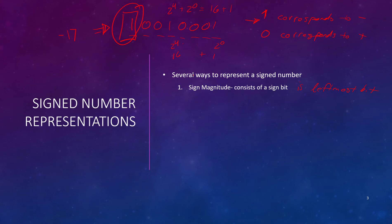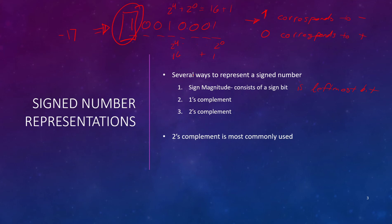There are a couple of other ways we can represent signed numbers. There is 1's complement and there is 2's complement. Two's complement is the most widely used way of representing signed binary numbers.